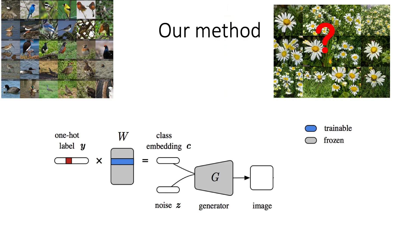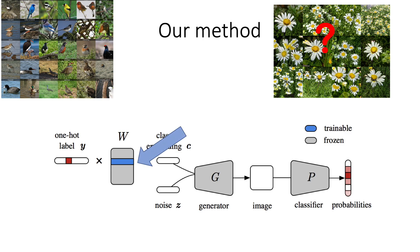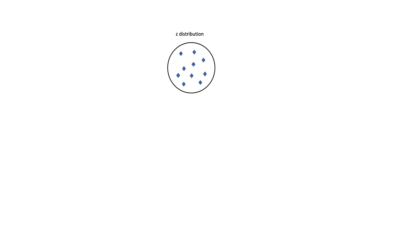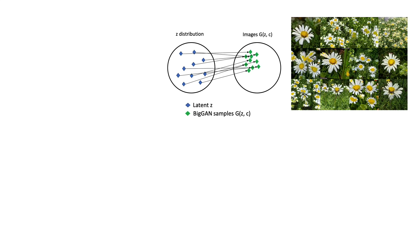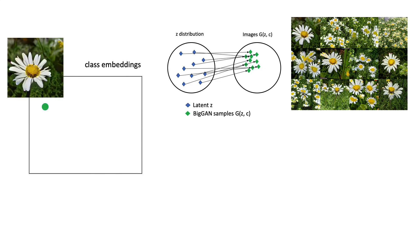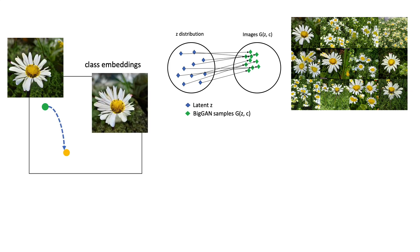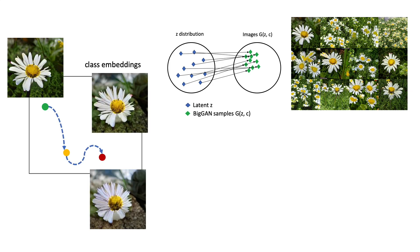So how do we improve such low sample diversity? We propose to attach a pre-trained image classifier to the output of the generator and search for new class embeddings that maximize the log classification probabilities. With BigGAN embeddings, the latent vectors are mapped to nearby points, producing limited diversity samples. Within a small neighborhood, we move the original embedding to a new point where the generated samples are more diverse.